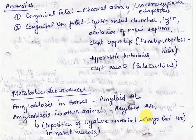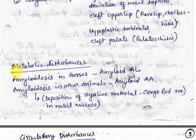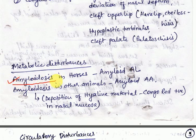Next are metabolic disturbances, which are also rare in domestic animals. Amyloidosis, which is associated with the deposition of amyloid protein — fibrils with beta-pleated configuration in various tissues — has been reported in the nasal cavity of horses.